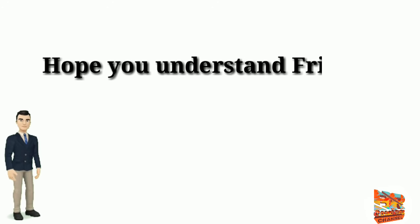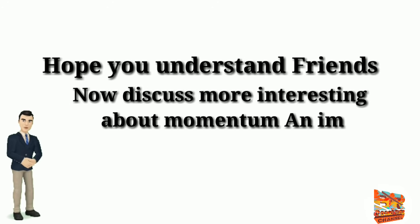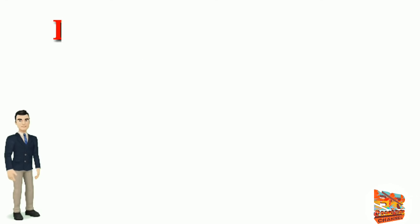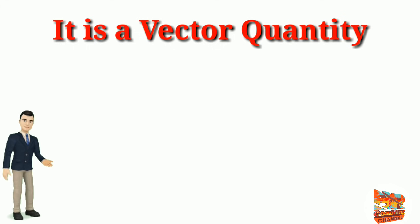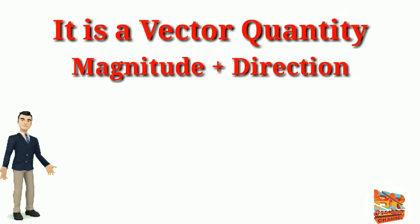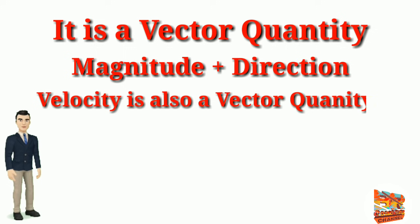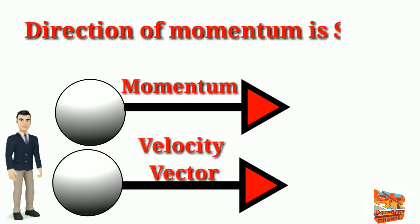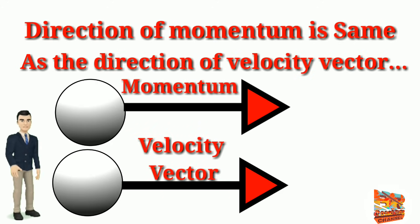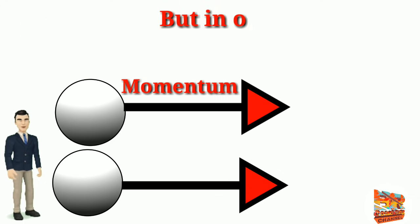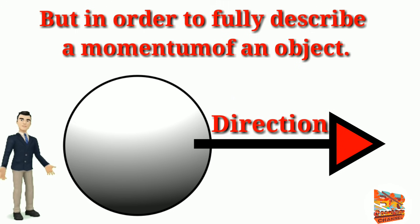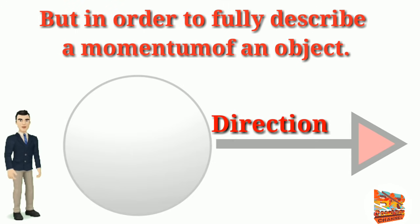I hope you understand friends. Now let's discuss more interesting things about momentum. An important thing to note about momentum is that it is a vector quantity. This means that it has both magnitude and direction. Velocity is also a vector quantity because it has both of these components. The direction of the momentum is the same as the direction of the velocity vector. But in order to fully describe the momentum of an object, you must include its direction, otherwise it's not a vector.